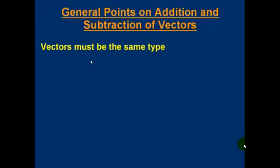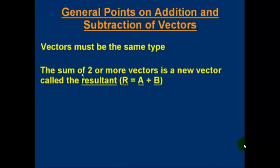If you're going to add or subtract vectors, the vectors must be the same type. You can't add a velocity vector to a force vector. You can only add a velocity vector to another velocity vector. If we add some vectors together, the sum of two or more vectors is a new vector and it's the same type as the ones we started with. And the sum is called the resultant. Important word. So, for example, if we add vectors A and B together, the sum is called R. R is the resultant.